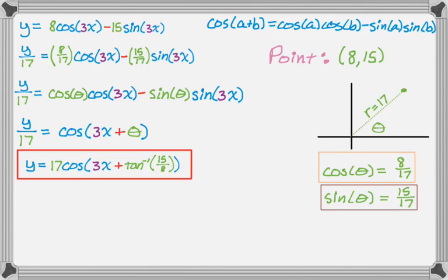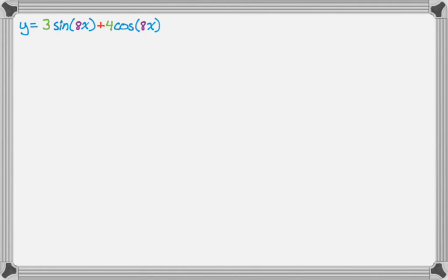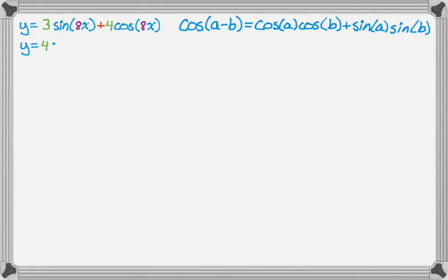So let's do one more example. Say we have y equals 3 sine of 8x plus 4 cosine of 8x. Well, since there's a plus sign there, I'm going to use cosine of a minus b. So cosine of a minus b looks like this. And then I'm going to rearrange what I was originally given so that it looks a little more like that formula. So really, I'm just moving the cosine part to the front. And you can do that pretty much every time.